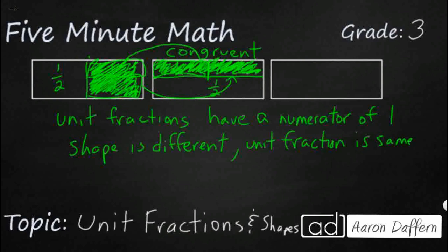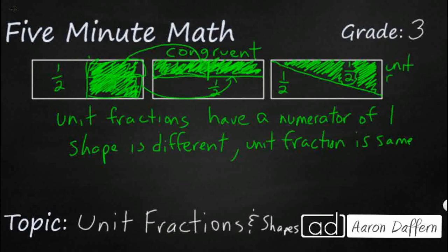Now let's get wild and crazy — take a look at this. I've cut this shape in half diagonally, and remember, unit fractions not only have a numerator of one, they also represent equal groups. So this piece here is equal in size to the other one-half, which is why I can call it one half. This is another unit fraction of the exact same shape we've already seen two other times.